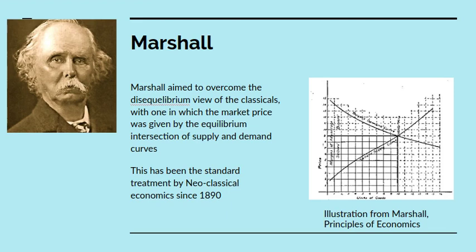Now, this was obviously an ideological problem for capitalist economics and it was resolved by Marshall, who aimed to overcome the disequilibrium view of the classicals, with one in which the market price was given by the intersection of supply and demand curves. Previously, the classical economists had said the equilibrium price is the labour value and supply and demand are disequilibrium phenomena. Instead, Marshall says, no, supply and demand interact to produce an equilibrium which is the market price. And this has been the standard treatment by neoclassical economists ever since. And the diagram to the right is Marshall's original supply and demand curve hand-drawn in his book Economics.